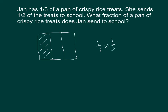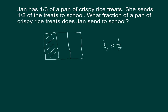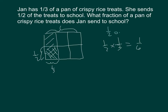We need to draw one half on the area model. One half times one third is equal to one sixth. This was one third, this was one half, and the whole thing was one. So Jan sends one sixth of a pan of crispy rice treats to school. It was one half of one third.